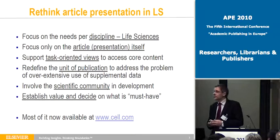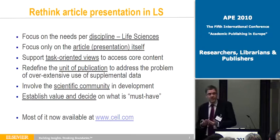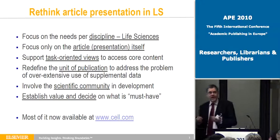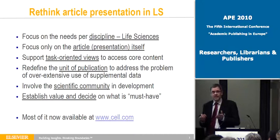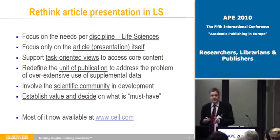We focused on the presentation of the article in this first prototype — not on context and linking. Just given the material that we get from the author, what can we do to improve the presentation? We did that by looking at the tasks of the reader: how does the reader want to consume the article? It was also said yesterday that we have to look at context of users, context of readers, and tasks of readers. That's our starting point.